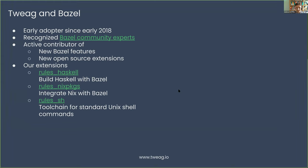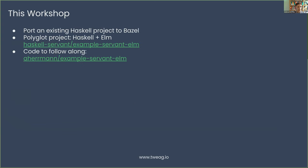In this workshop, we'll mostly look at code. The goal is to port an existing Haskell project over to build with Bazel and to highlight some of the more interesting features. I chose a polyglot project — an example project from the Haskell Servant project that combines Haskell and Elm: a Servant backend written in Haskell and a frontend written in Elm. It's a simple to-do app.